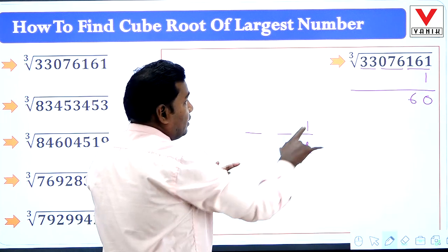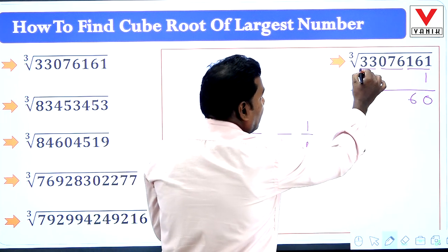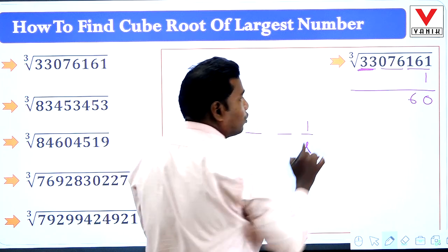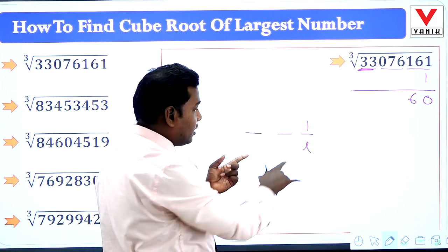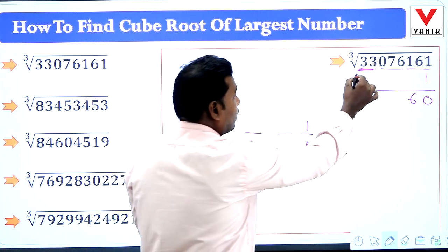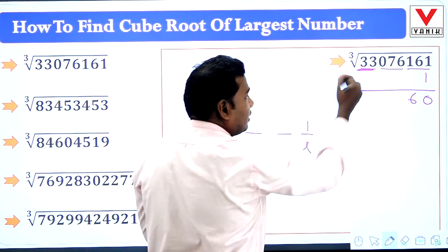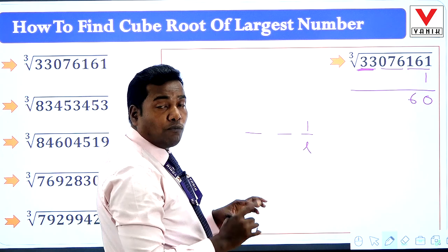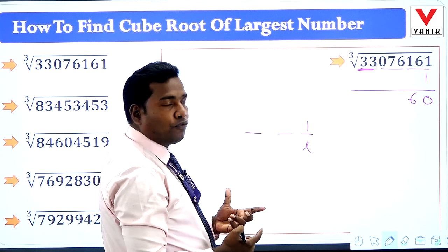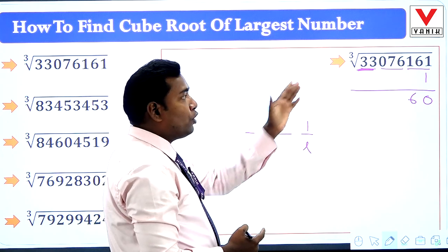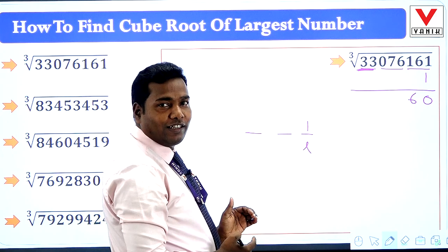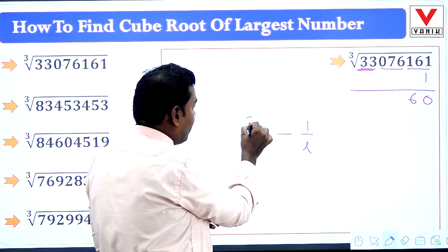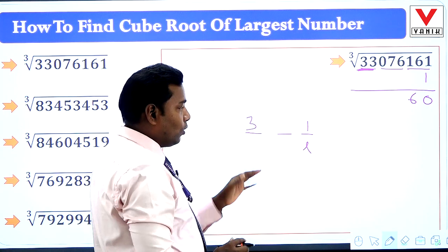The first group is 33. The last digit is 1 and the first group is 33. Now, 3 cube is 27 and 4 cube is 64. Since 64 is more than 33, we cannot take 4. So we take 3.